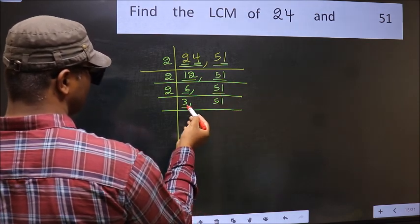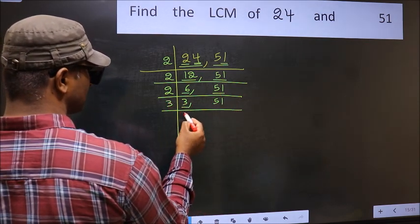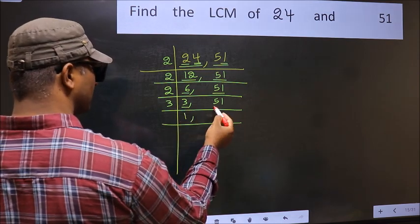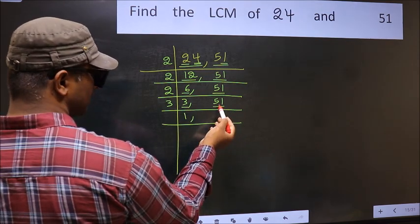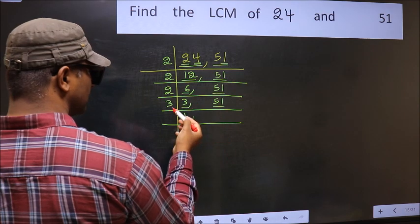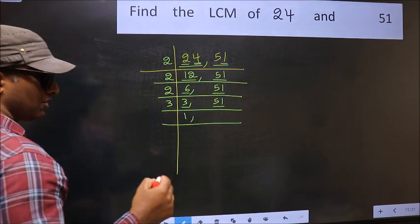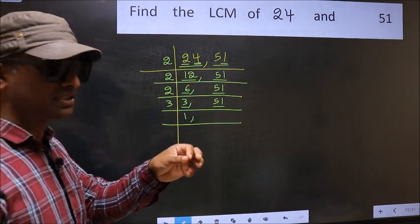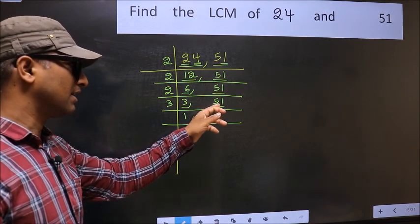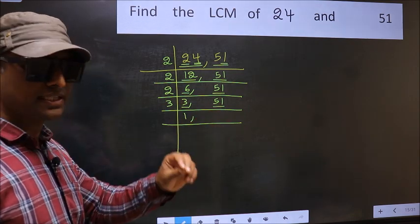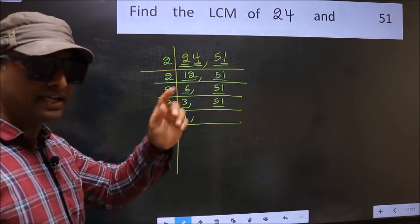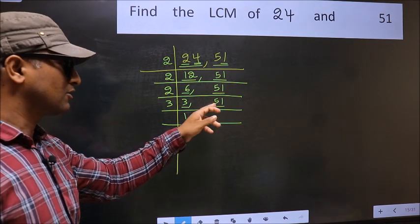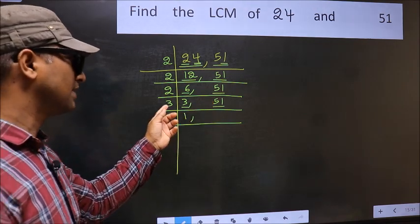Now here we have 3. 3 is a prime number, so 3 ones are 3. For the other number 51, to check whether it is divisible by 3, add the digits: 5 plus 1 equals 6. And 6 is divisible by 3, so 51 is also divisible by 3.